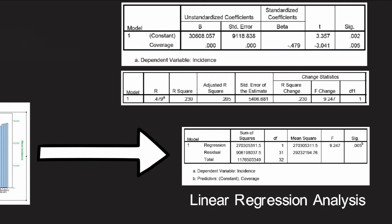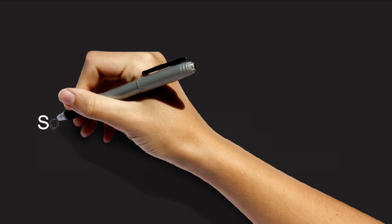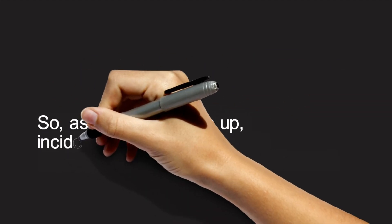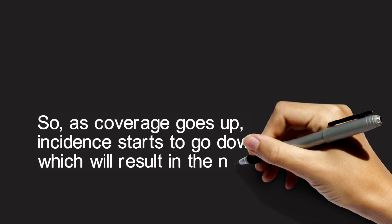Finally, it has a negative beta, which means as one predictor goes up, the other goes down. So as coverage goes up, the incidence starts to go down, which will result in the negative slope.